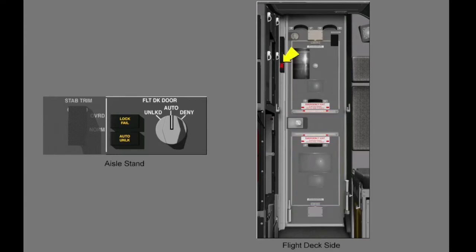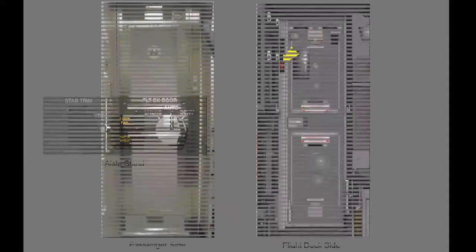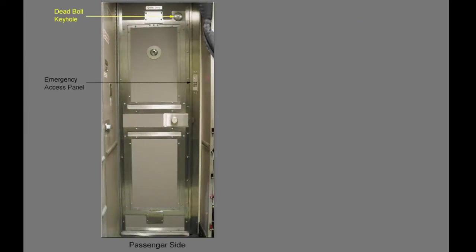The flight deck side also has a flight deck access system switch. This switch controls the power to the system. The passenger side consists of a dead bolt keyhole and an emergency access panel.